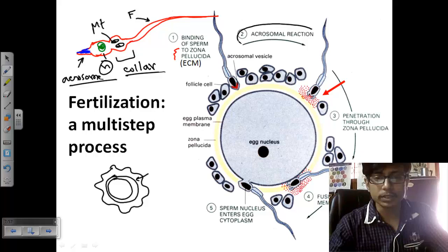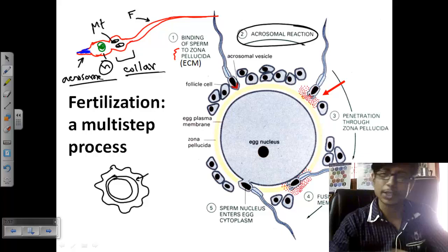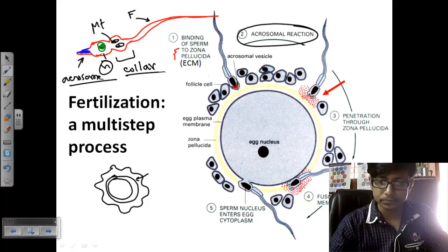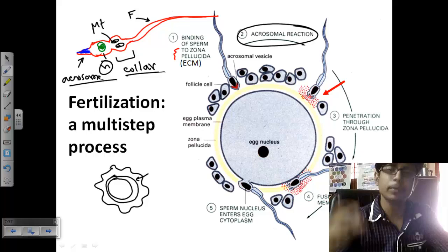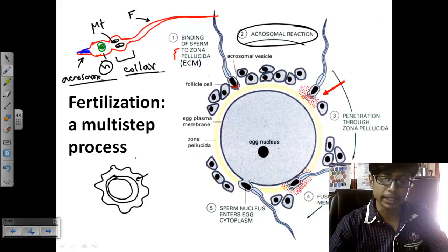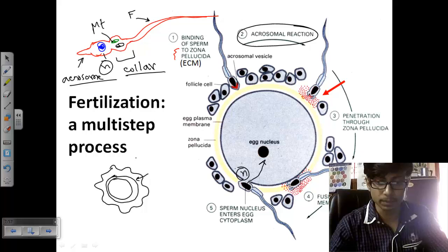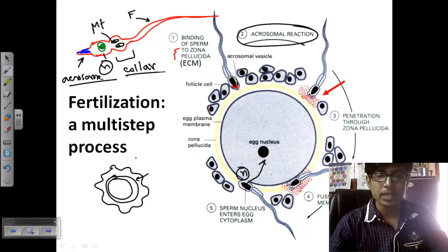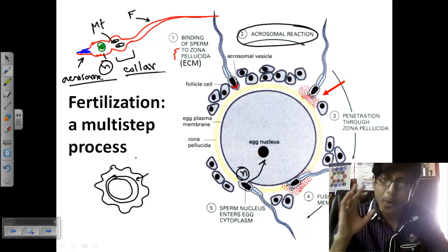Binding of sperm to the zona pellucida is followed by the acrosome reaction. In the acrosome reaction, the acrosome secretes its materials outside, degrading the vitelline membrane and other barriers. As a result, the sperm is in direct contact and can fuse its membrane with the egg membrane. The cytosol of sperm and egg come into contact, and the sperm pronucleus is delivered inside the egg cytosol.